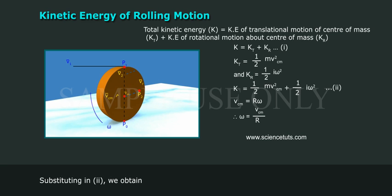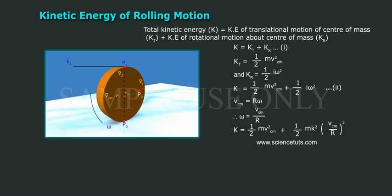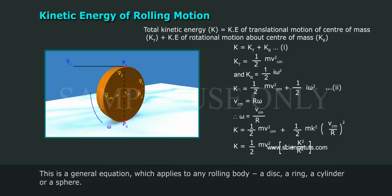Substituting in equation 2, we obtain: K = ½mV_CM² + ½mk²(V_CM/r)², which simplifies to K = ½mV_CM²(1 + k²/r²). This is a general equation which applies to any rolling body: a disc, a ring, a cylinder, or a sphere.